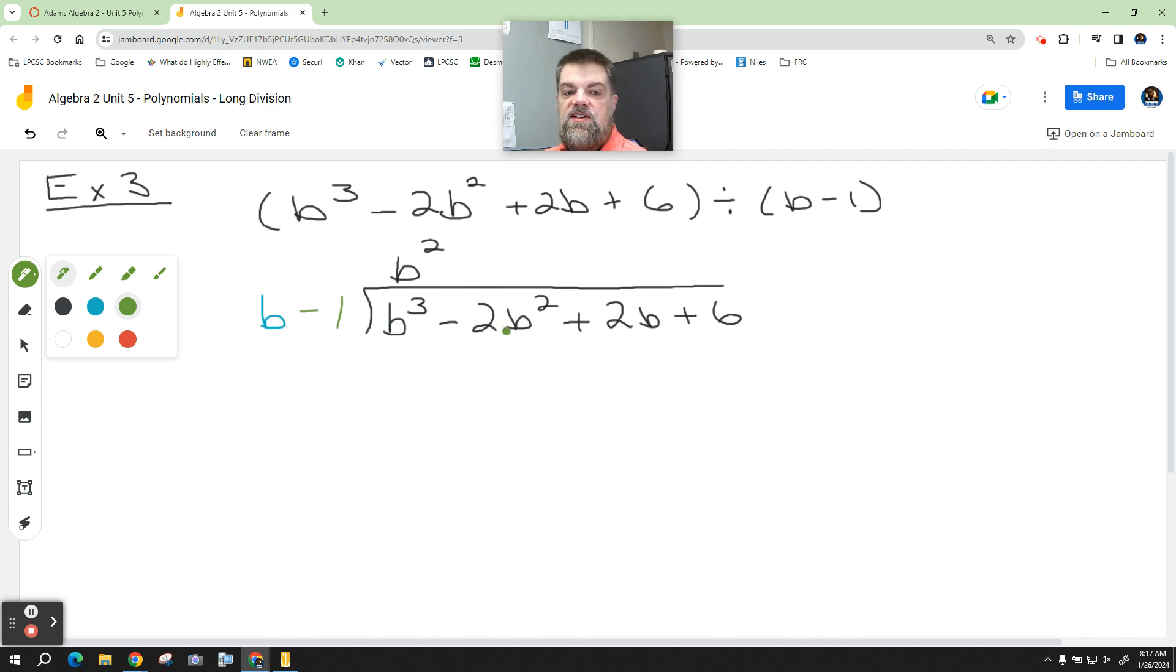What is b squared times negative 1? Negative b squared. So since it's negative b squared, I'm going to write it over here under, negative 1b squared. I'm writing it over here with the b squared, because we can only add and subtract b squared with b squareds. Now, what is b squared times b? b cubed.